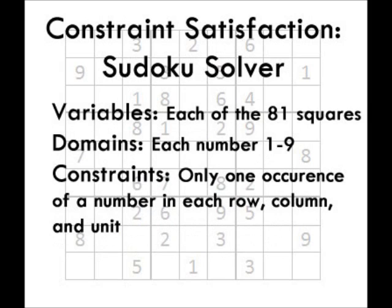This is what the constraint satisfaction technique does. A constraint satisfaction problem is defined by three things: a list of variables — in this case the 81 squares; a domain for each variable — in this case the numbers 1 through 9; and a list of constraints — in this case the three rules of the game. To solve the problem, we need to define what a solution is. For a Sudoku problem, the problem is complete when every variable has been assigned a value and none of them violate the constraints.